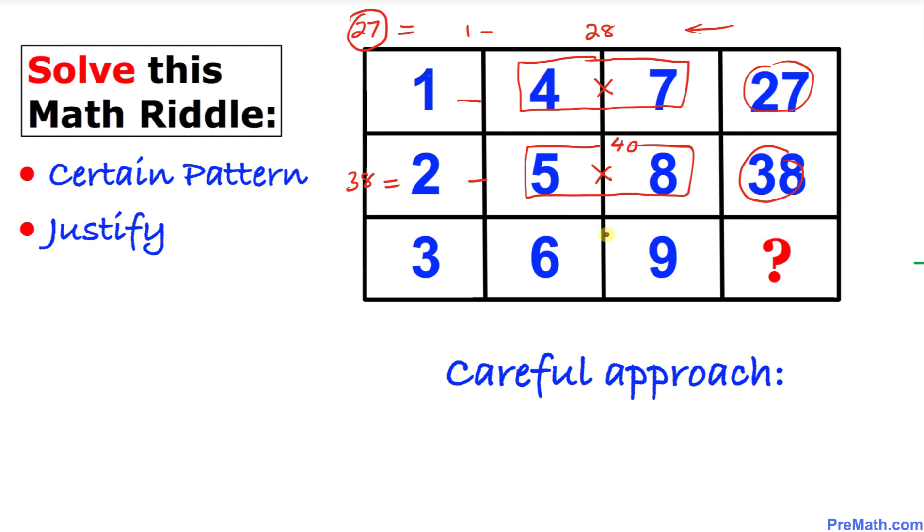And now let's apply the same rule for this next set of numbers. 6 times 9 is 54, and if we take away 3 from here we are going to get 51. So that means 51 is our desired answer.